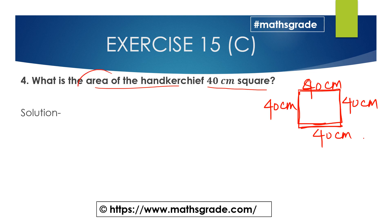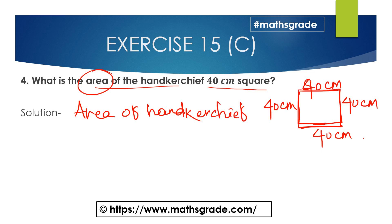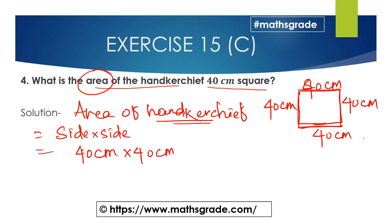We have to find the area of the handkerchief. The area of the handkerchief, which is square shape, will be side multiplied by side. The side is 40 centimeter, so 40 centimeter multiplied by 40 centimeter equals 1600 square centimeter. So the area of the handkerchief is 1600 square centimeter.